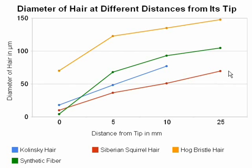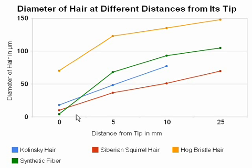Now let's consider synthetic fiber and how it compares to the natural hairs. The diameter of the synthetic fiber is very close to the diameter of the Kolinsky hair — it's a little bit larger — but as we go towards the tip one can see that it drops dramatically, and at the very tip it has a smaller diameter than both Kolinsky sable hair and Siberian squirrel hair. This is one recommendation I would make to synthetic fiber manufacturers: don't reduce the diameter at the tip very much, and put it more in line with the Kolinsky hair diameter.